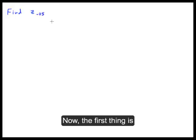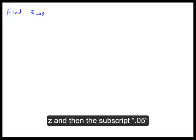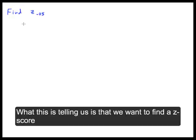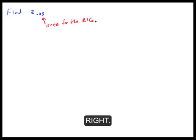Now the first thing is, let's go through what that means. When you have this notation — z with a subscript 0.05 — what this is telling us is that we want to find a z-score that has 0.05 area to the right.